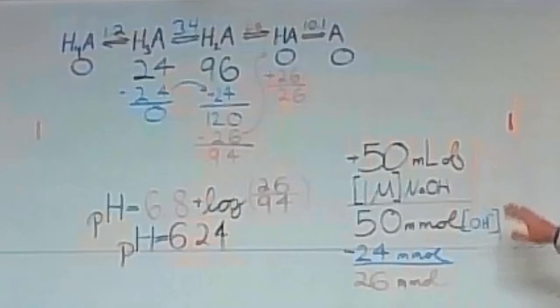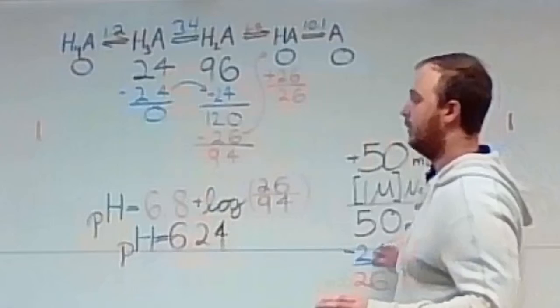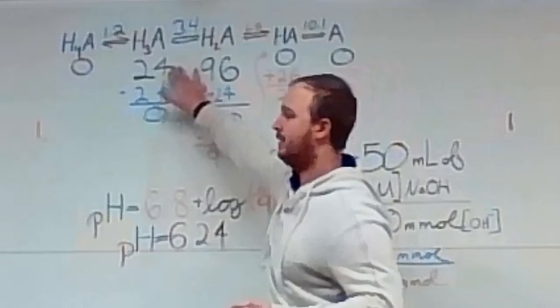So in the problem, this states that we add 50 milliliters of 1 molar NaOH, and as we know, that comes out to be 50 millimoles of OH-, NaOH is a strong base and completely dissociates. So the OH- will preferentially like to attack the most acidic proton possible, which brings us to the H3A.